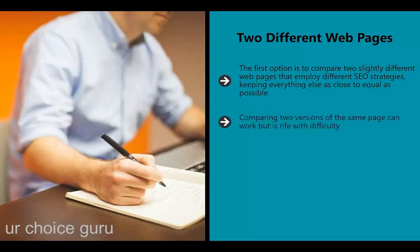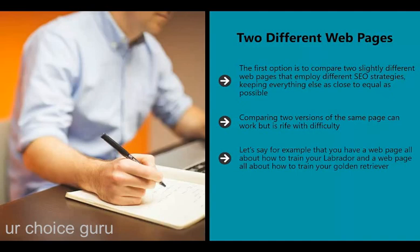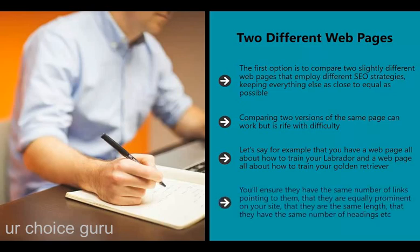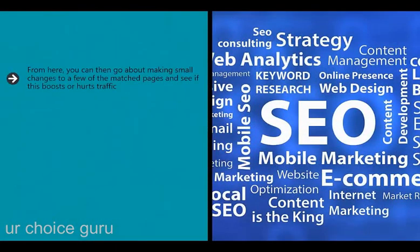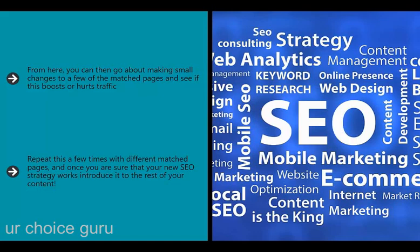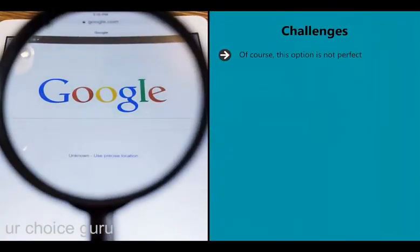More accurately, you'll compare two groups of different pages. For example, you might have a web page about how to train your Labrador and a web page about how to train your golden retriever - almost identical in subject matter. You ensure they have the same number of links pointing to them, that they're equally prominent on your site, the same length, the same number of headings, and so on. From there you make small changes to some of the matched pages and see if this boosts or hurts traffic. Collect as much data as possible, repeat with different matched pages, and once you're sure your new SEO strategy works, introduce it to the rest of your content.